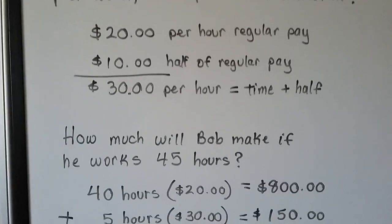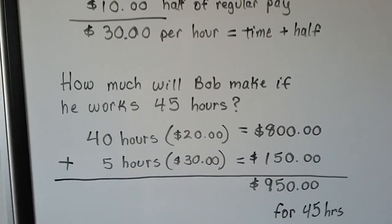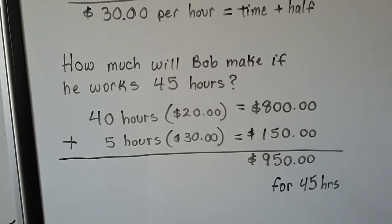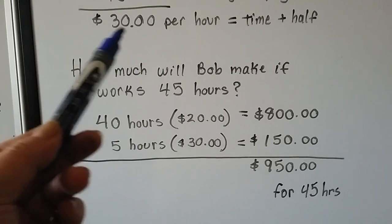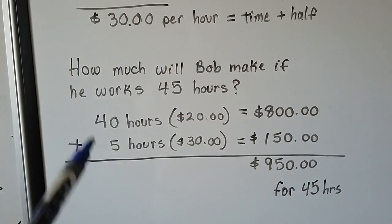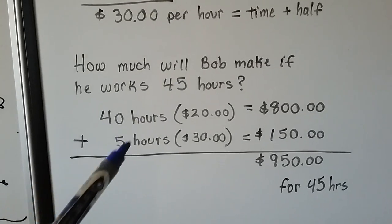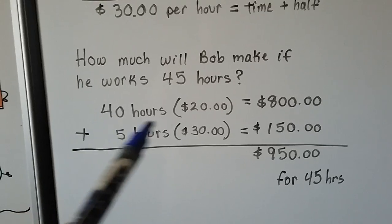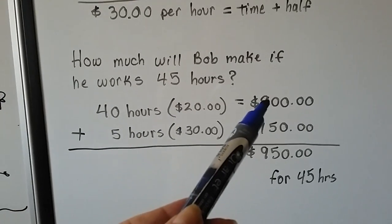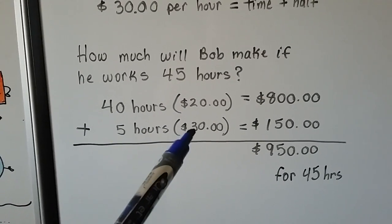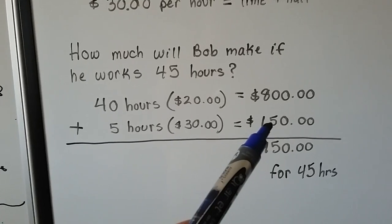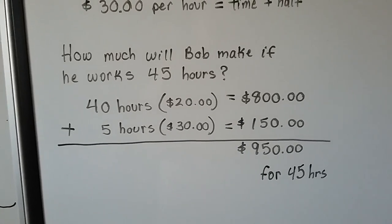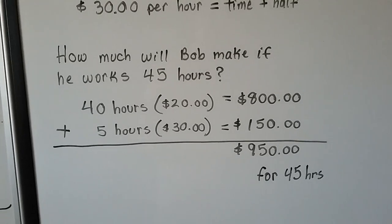So how much will Bob make if he works 45 hours? For the first 40 hours, he makes $20 an hour. He's making $30 per hour for time and a half. So if he works 45 hours, we need to count five hours at $30. 40 hours at $20 per hour is $800. Five hours at $30 per hour is $150.